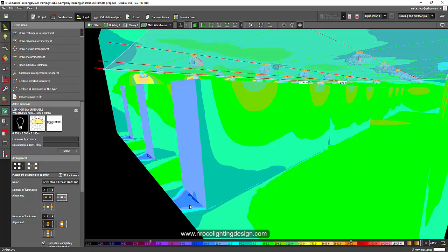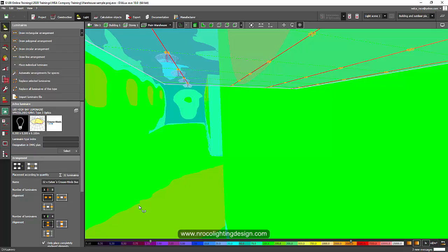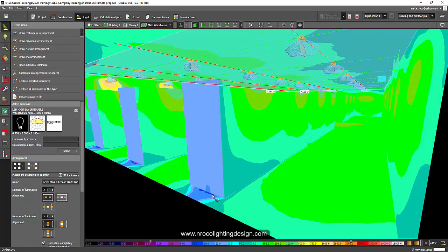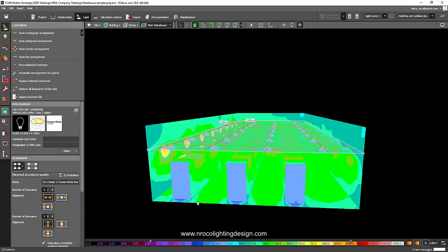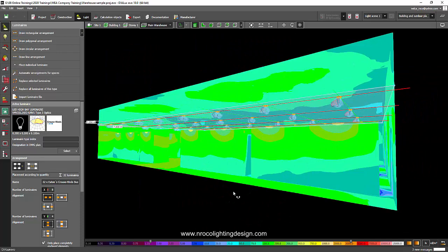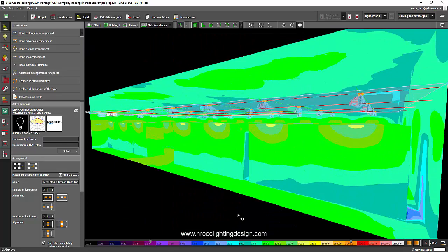So that's why sometimes the consultant, the MEP consultant, will ask you to give a lighting calculation report on the vertical, not on the horizontal. They are more concerned on the vertical, especially if the warehouse has 10 to 12 meters racking system. They are into vertical, not into horizontal. That's why the lighting design for a warehouse is a little challenging.